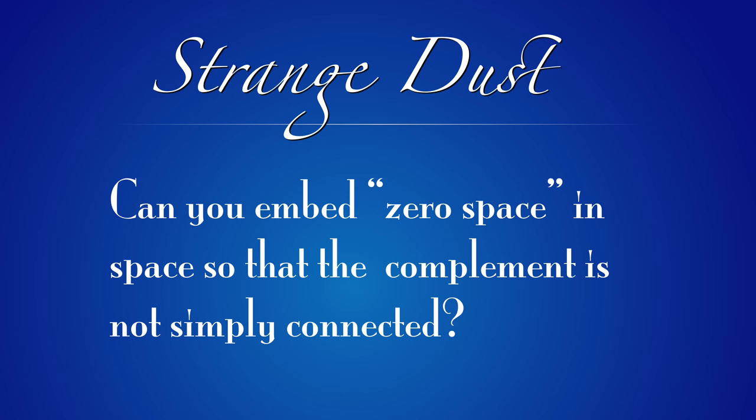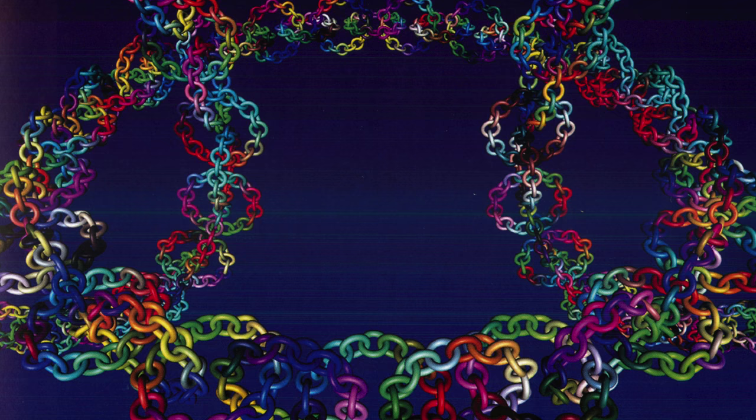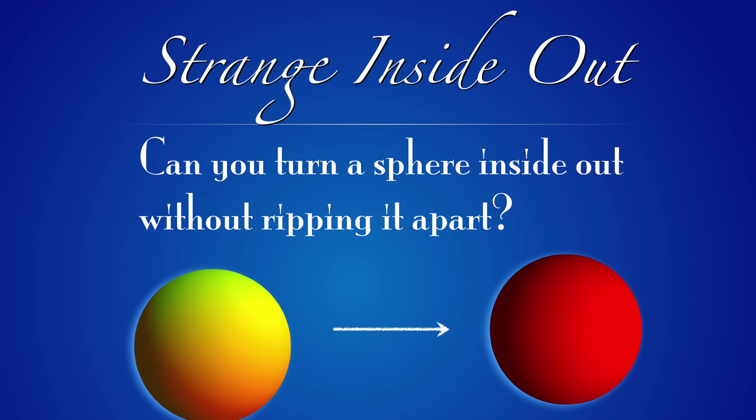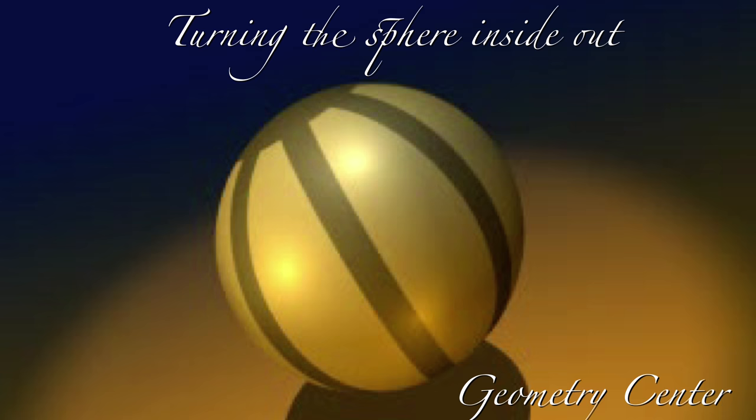Is there a three-dimensional space such that the complement is not simply connected? The answer is yes, again, given by the Antoine necklace. Here's a picture from The Math Book. This necklace is obtained recursively with a fractal-type structure, replacing a torus in the necklace with, again, the entire torus. Can you turn a sphere inside out without ripping it apart? The answer is yes, and it's animated in a movie by the Geometry Center, also explained at various places on YouTube.